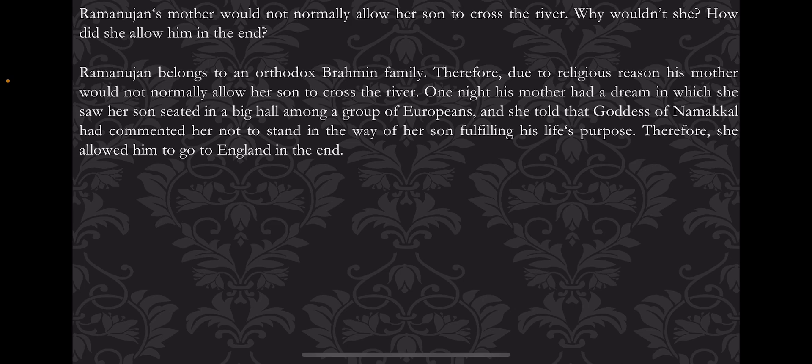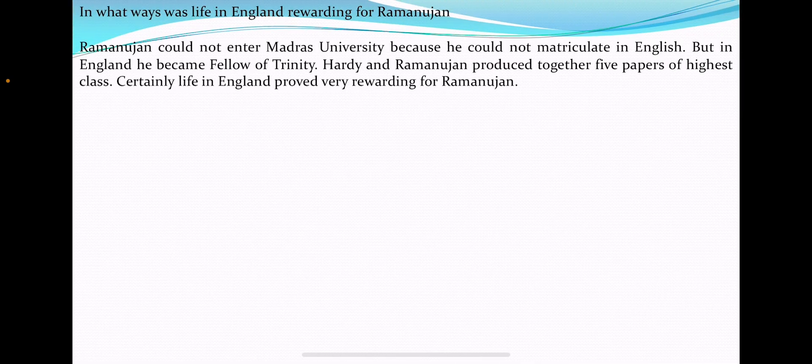Ramanujan belonged to an orthodox Brahmin family. Therefore, due to religious reasons, his mother would not normally allow her son to cross the sea. One night, his mother had a dream in which she saw her son sitting in a big hall among a group of Europeans. The goddess Namakal commanded her not to stand in the way of her son fulfilling his destiny in England, and in this way she allowed him to go to England.